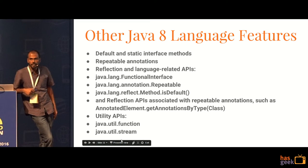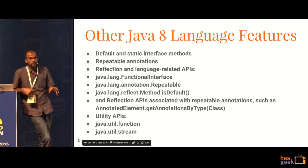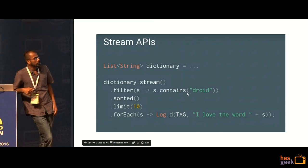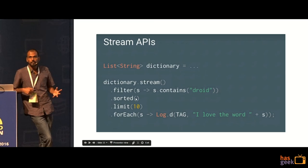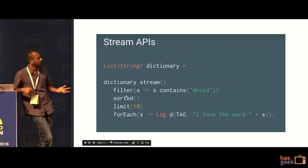Stream APIs are quite wonderful because they let you chain a set of commands together and run them on a single object. For instance, if you want to filter a list, check for different words that contain 'droid', then sort them and limit it to 10, and you want to run all of these things together, then you would call the stream APIs. Essentially they run in multiple threads out of the box. So if you want to do multi-threading, this is perfect for you. And this is the biggest positive that comes with Jack and Jill.